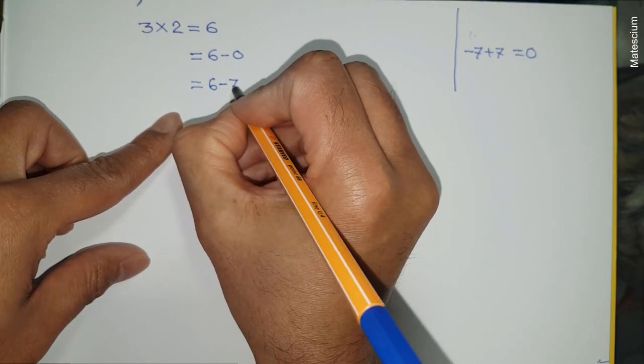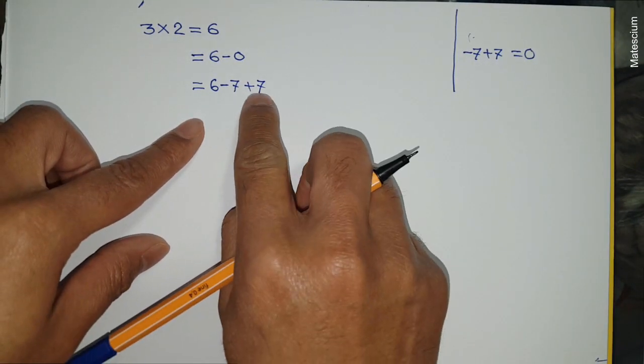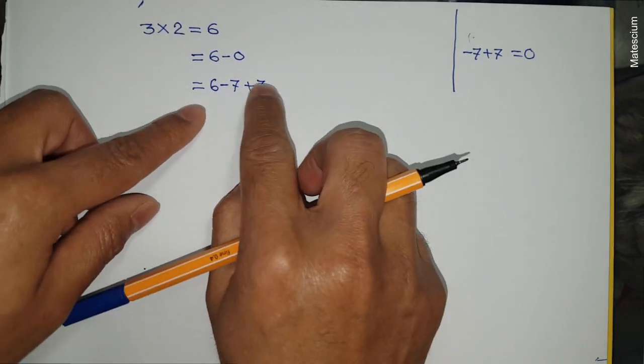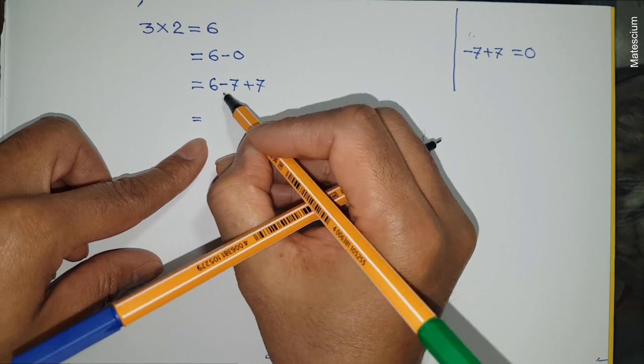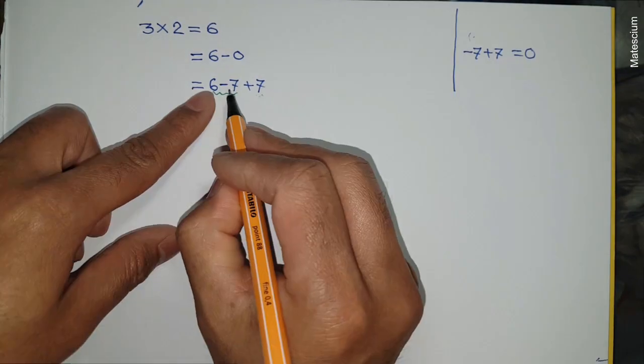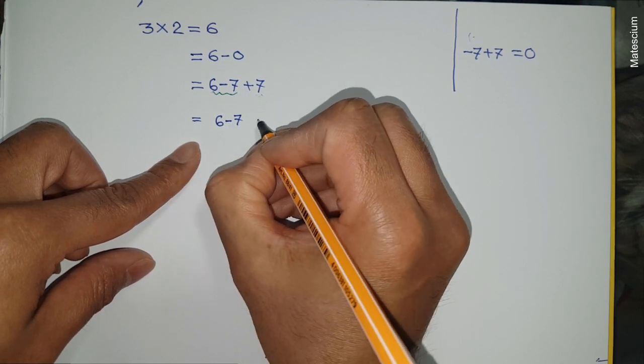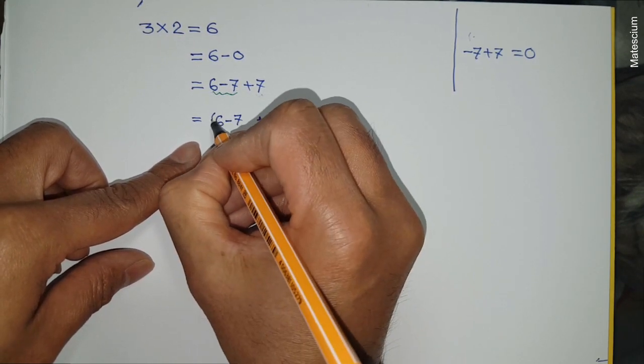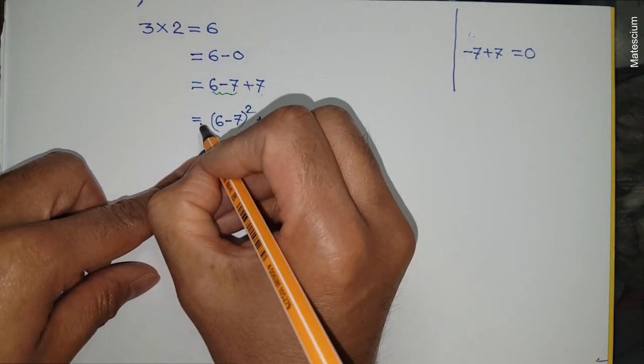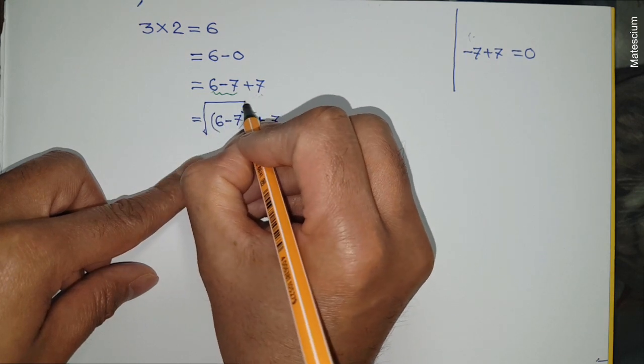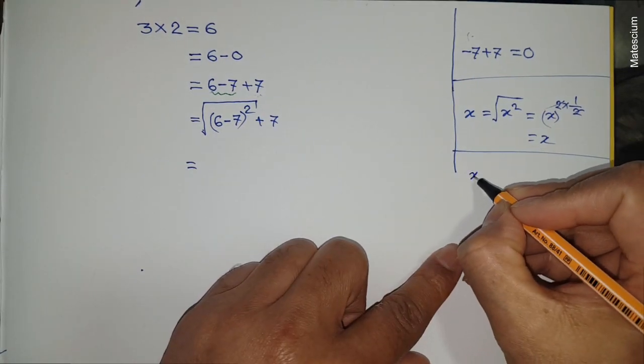Next statement is six minus seven plus seven. Until now I didn't break any mathematical rules, and this equals six exactly as I started. I want to work on this part only. Let's rewrite this equation once again: six minus seven plus seven. I want to introduce a square here. To suppress this square, I have to introduce a square root: six minus seven under square root, and this square cancels.